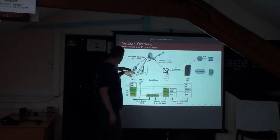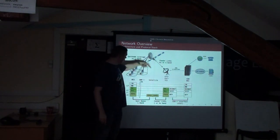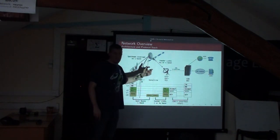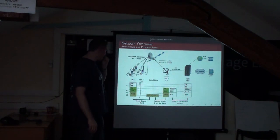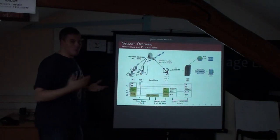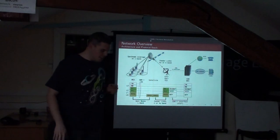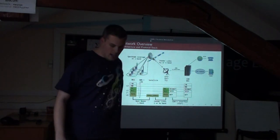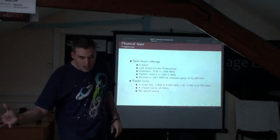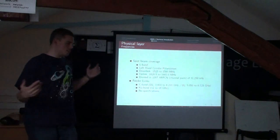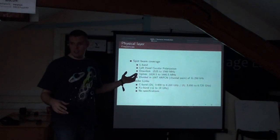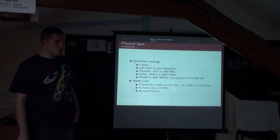Looking at the feeder link: every call from every cell goes through the feeder link. So if you can listen to the feeder link, you get everything — which is very cool. There's one feeder link per satellite, so you need two. It covers a very large part of the world already. To receive the feeder link, you don't necessarily need to be near the earth station. The earth station is in Dubai, and the guy who captured it is in St. Petersburg.